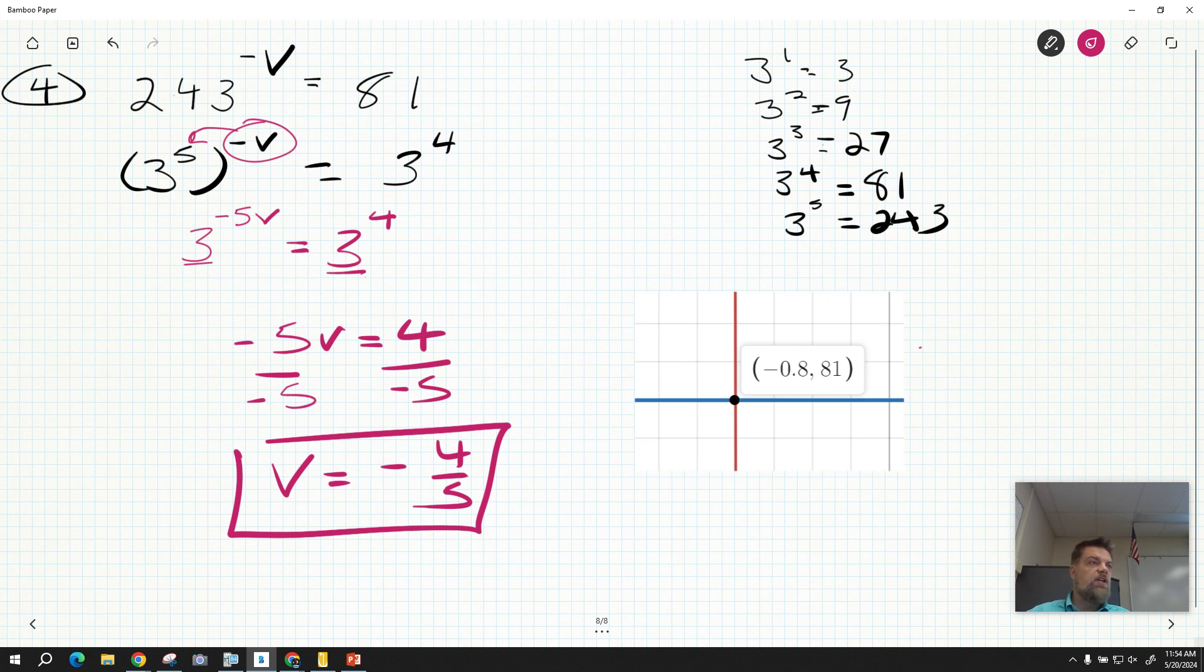The solution is just the x value. So we're only interested in the x value. Now, that is our solution. I don't care about the 81, I just care about the negative 0.8.